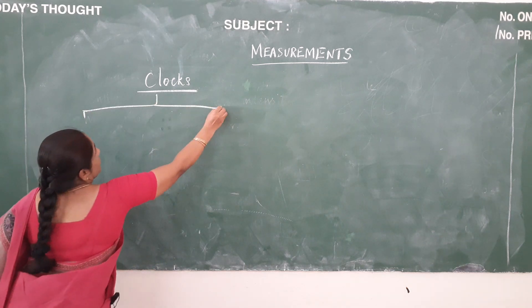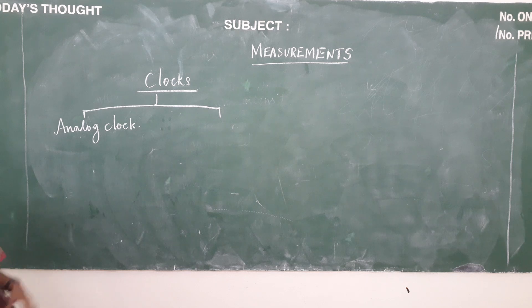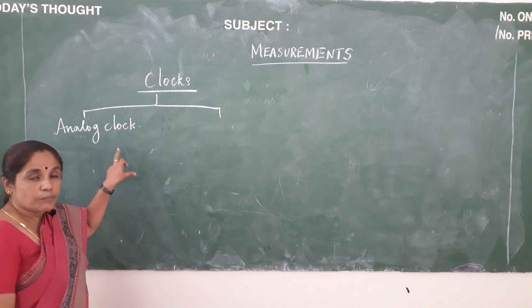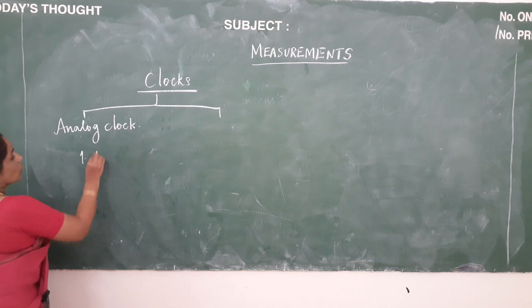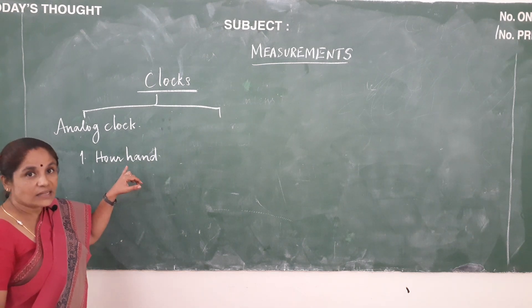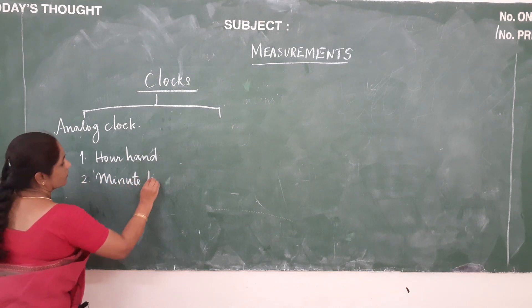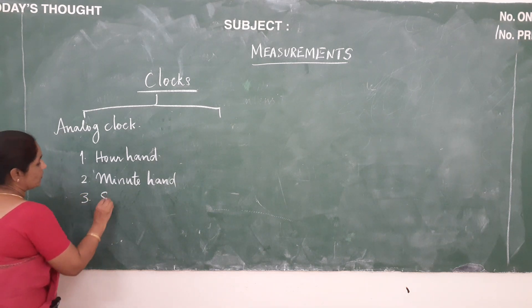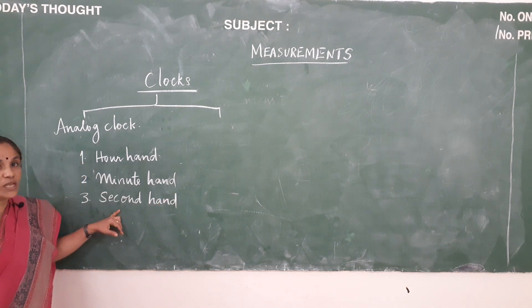We have two types of clocks. The first clock is the analog clock. This analog clock could be operated either mechanically or electronically. It has three hands: the hour hand, which is short and thick and shows the exact hour; the minute hand, which is long and thin and shows the minutes; and the second hand, which is long and very thin and shows the seconds.